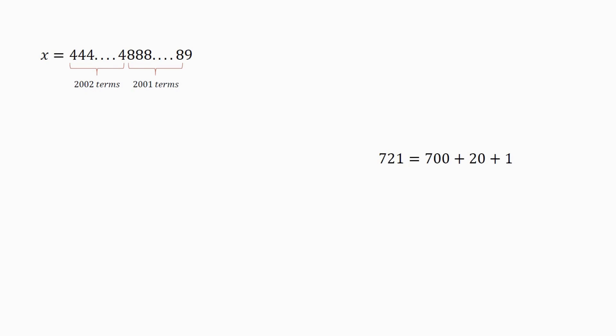We know 721 can be written as 700 plus 20 plus 1, which is equal to 7 times 10 squared plus 2 times 10 to the power of 1 plus 1. Any number can be written in this form, so this technique is very useful to solve this problem.